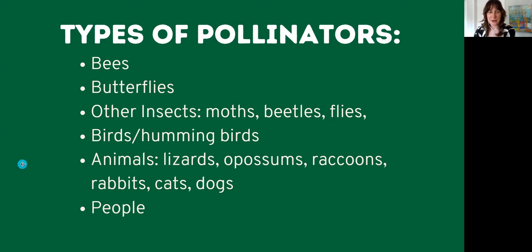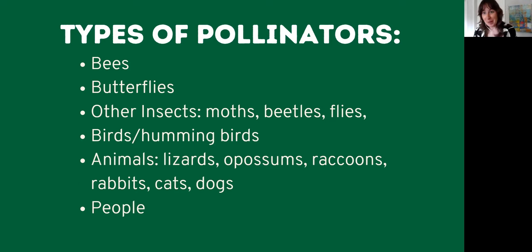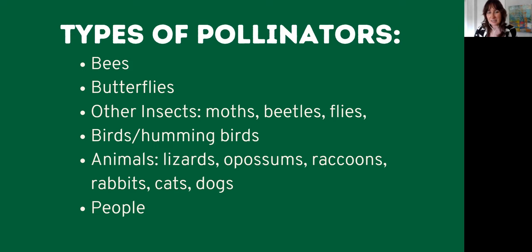Something to point out is that often some of these pollinators are not necessarily creatures we stereotypically want in our garden — we don't necessarily want rabbits coming in to eat our plants, but they can be beneficial. Similarly, moths and beetles have a really bad reputation for eating plants, but they can also play a beneficial role. Creatures that may seem harmful in certain situations can be beneficial for other plants.